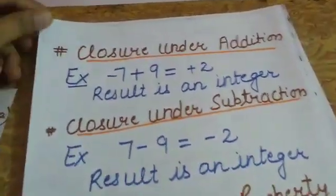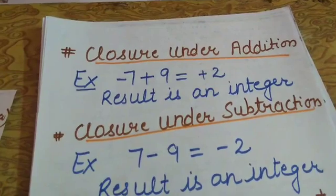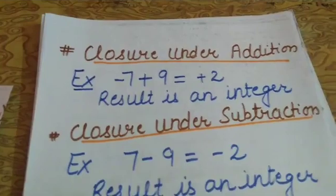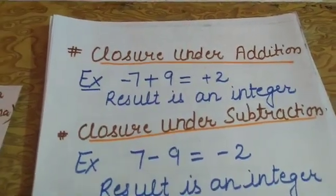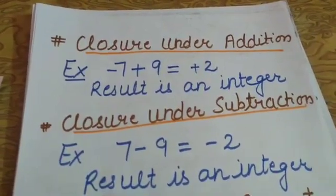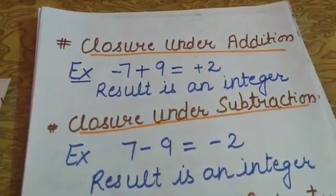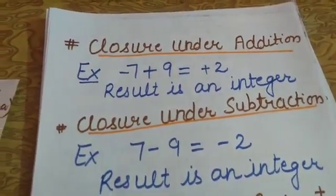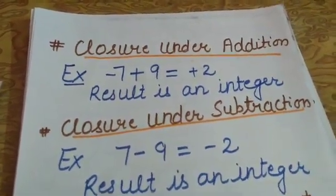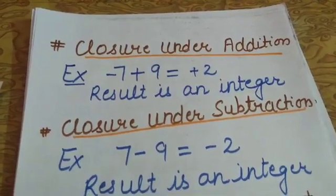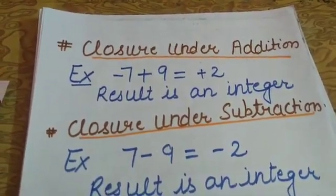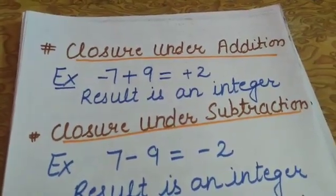The first property we are going to learn is closure under addition. What this means: if you are adding any two integers, either positive or negative, the result is always an integer. For example, suppose you are adding minus 7 and 9, you will get plus 2, which is also an integer. So closure under addition means if you add any two integers you will always get an integer.